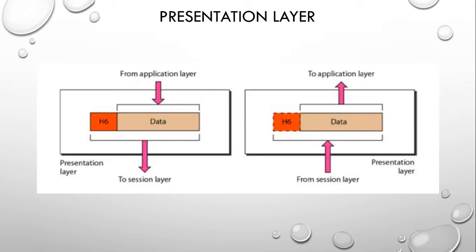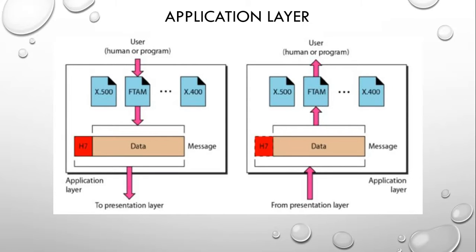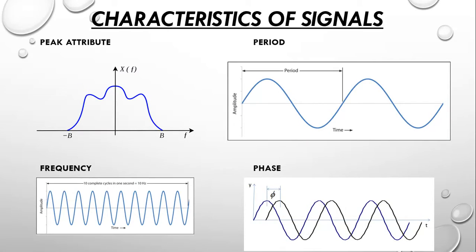Finally, the application layer provides a user interface to communicate with lower layers. Examples include SMTP and HTTP. Next, we'll move on to the characteristics of a signal. There are four characteristics of a signal: peak amplitude, period, frequency, and phase.